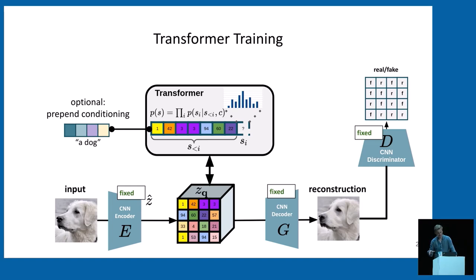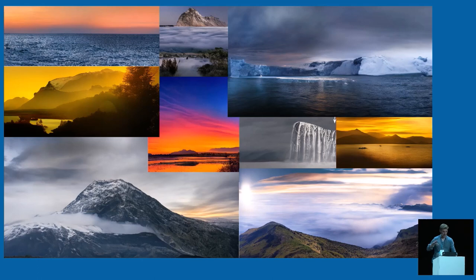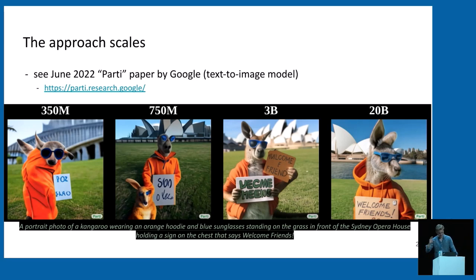We can additionally pass conditioning information such as a class label or text tokens by concatenating them to the sequence, giving us powerful multimodal models like a text-to-image model. In our university lab, we couldn't do full text-to-image modeling because that is really expensive, so we restricted ourselves to simpler distributions — we scraped landscape images and trained the model on those, still achieving high-quality results. I'm actually happy that Google came along and scaled this approach for a general text-to-image model. They published a paper called Parti, which translates text into a discrete image representation from which the image is decoded, demonstrating scalability up to 20 billion parameters on large-scale datasets.